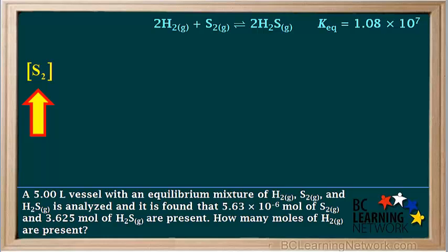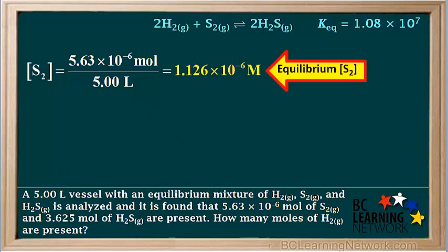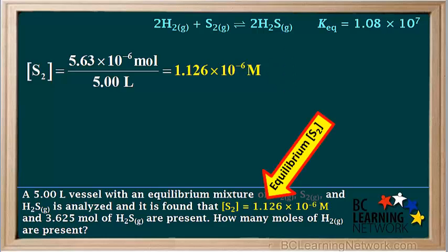We'll start with the S₂. Molar concentration is moles per liter, or moles divided by liters. So the concentration of S₂ is equal to 5.63 times 10 to the negative 6 moles divided by 5 liters, which comes out to 1.126 times 10 to the negative 6 molar. This is the equilibrium concentration of S₂, so we'll replace moles of S₂ with this concentration.